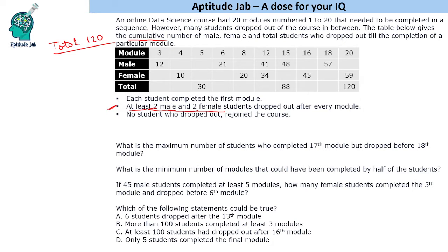The first question asks: what is the maximum number of students who completed the 17th module but dropped before the 18th? We have data for the 16th and 18th modules but not the 17th. To maximize dropouts in the 17th module, we need the minimum number of people to have dropped out till the 16th module, so as many as possible drop out in the 17th.